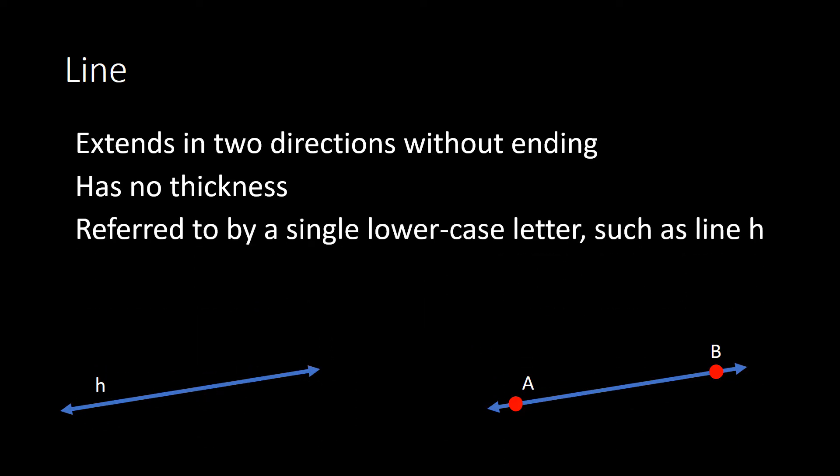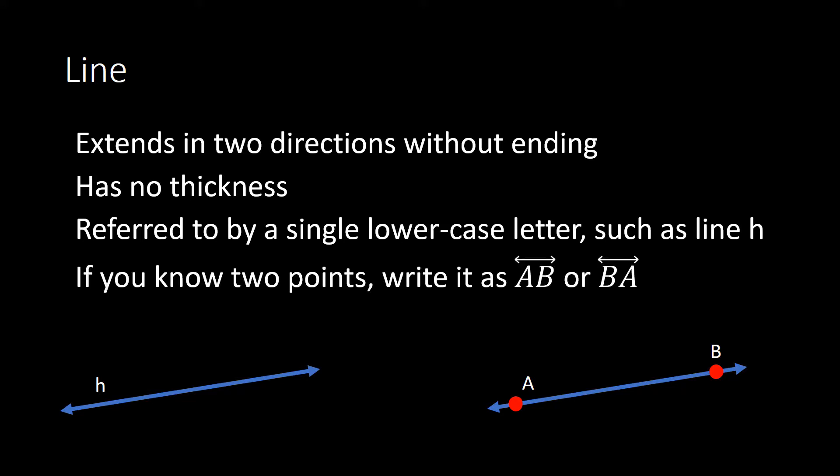As far as labeling lines or naming them, they're referred to by a single lowercase letter, such as line H. Or if we know two points, like points A and B on the right line, we can write it as AB with a line symbol above it, or BA with a line symbol above it. The order of the letters does not matter as long as we have that line symbol above. It's important to note that a line extends in two directions without ending — there's another term called a line segment that does end and has a beginning and end point. So there is a difference between a line and a line segment.